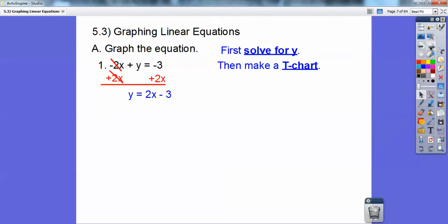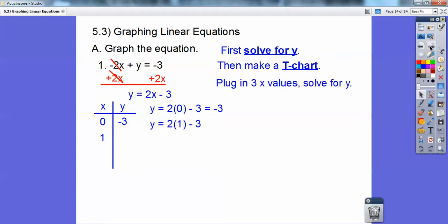Then we're going to set up a t-chart. So I'm going to plug in 3 x values to solve for y. So I like plugging in 0. You can plug in any x values you want, but 0 is a nice number to work with. So 2 times 0 minus 3. So 0 minus 3 gives me -3. Plug in another x value. Again, I like numbers I can deal with easily on this, so I'm going to plug in 1. So when I do 2 times 1 minus 3, I get 2 minus 3 is -1. Plug in another one that's easy to work with. 2. 2 times 2 minus 3 is 4 minus 3 or 1.